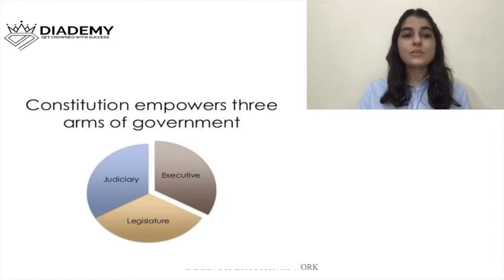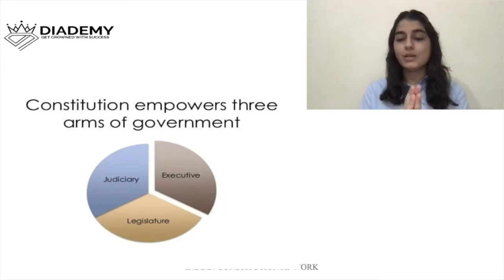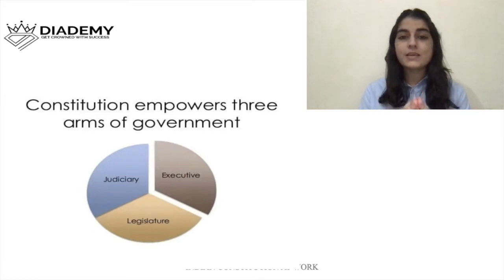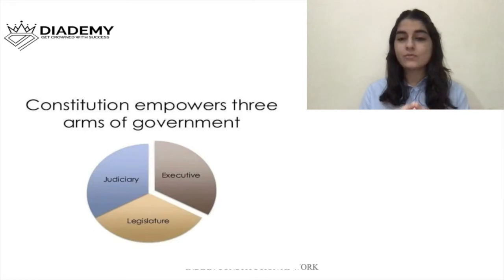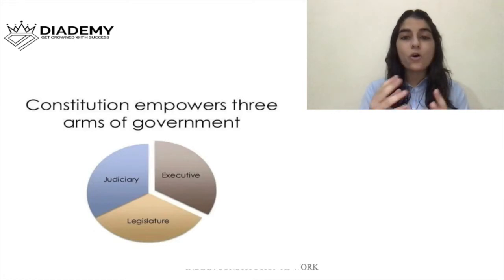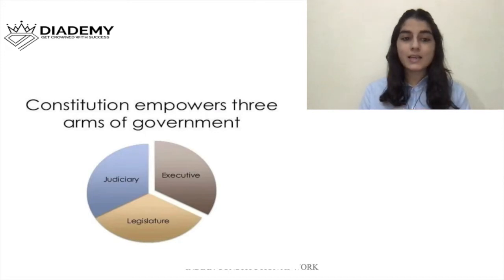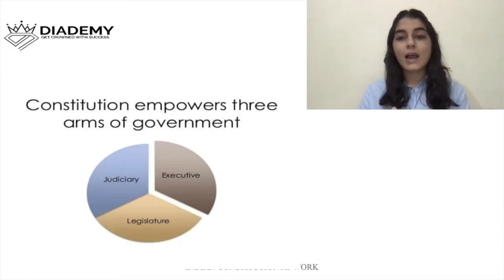The constitution empowers three arms of the government. There are three organs of the government. These three organs are legislature, executive, and judiciary.